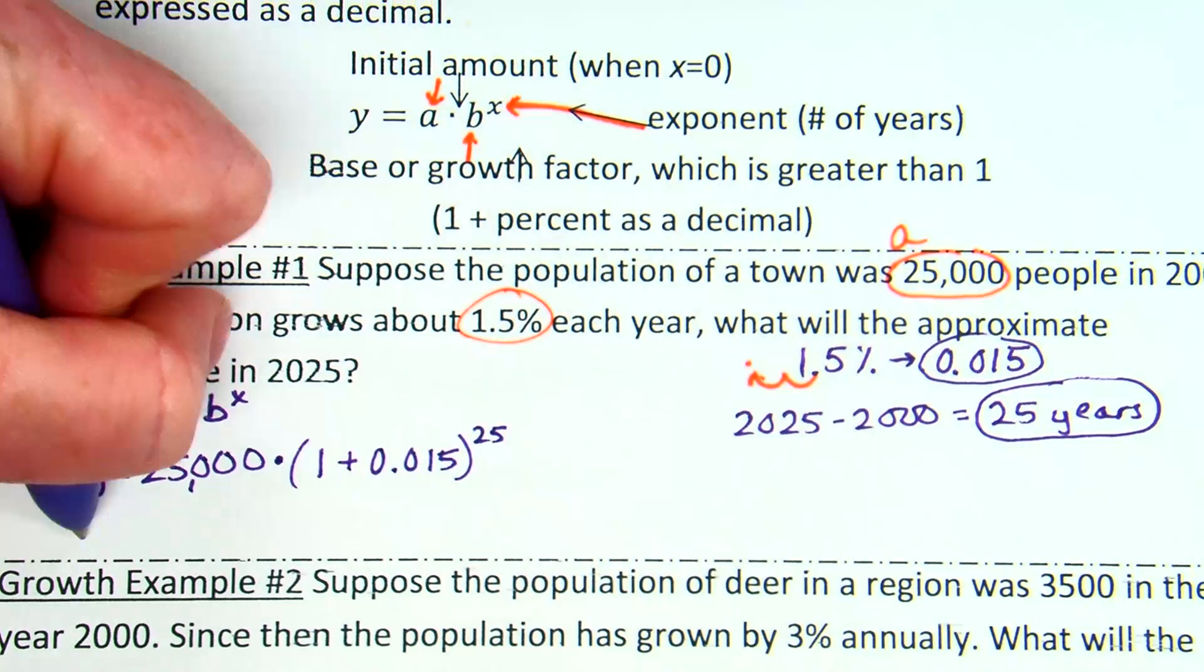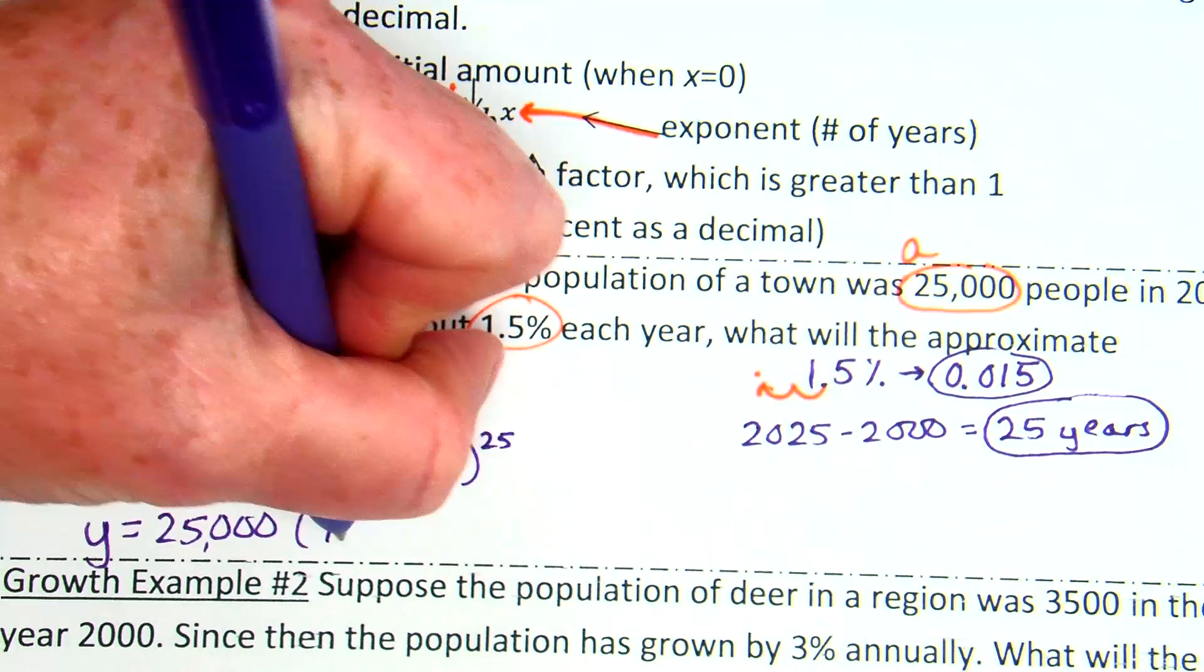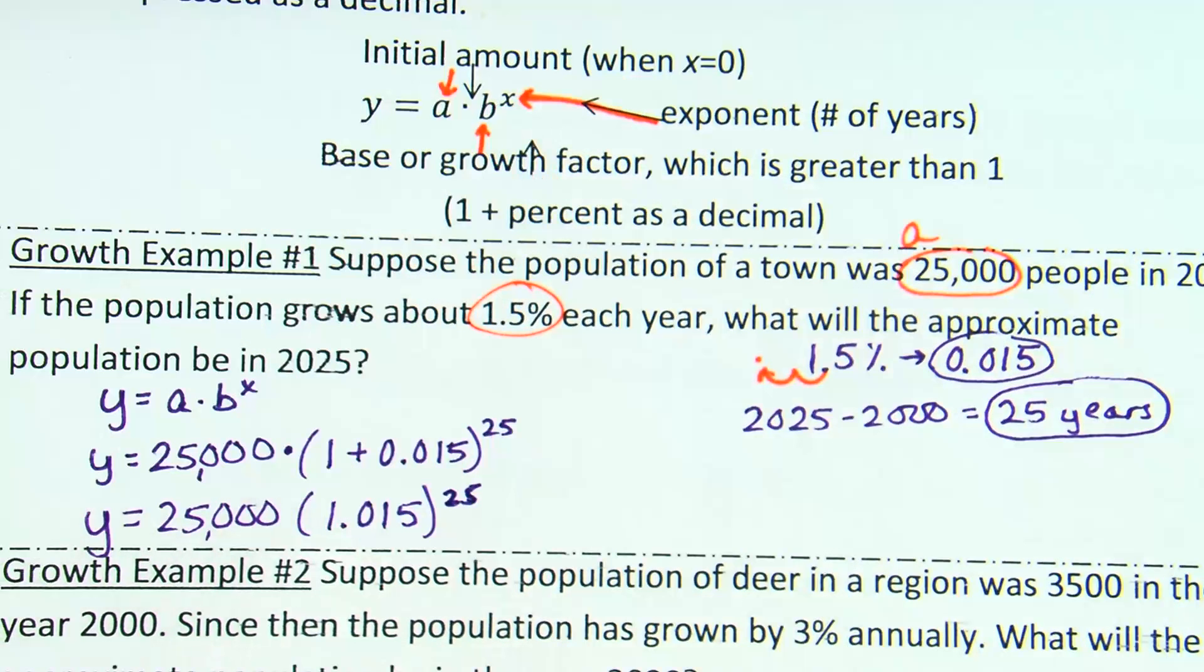Now, for the most part, this is a calculator problem. There's one small cleanup we can do. And that is in the parentheses. So I can say 25,000 times when we add these, 1 plus 0.015 is going to be 1.015, raised to the power of 25. This is why I had to grab a calculator, right? Because we're not doing this in our heads.